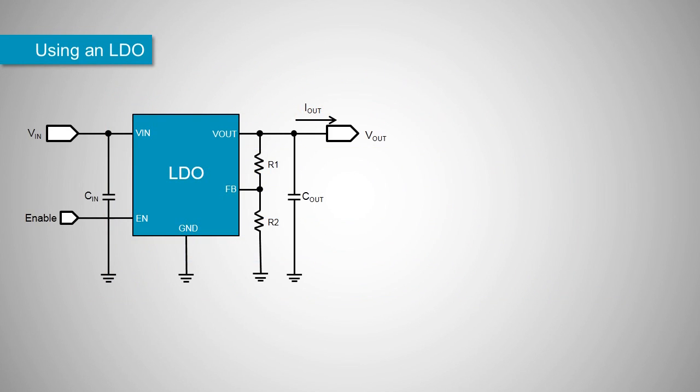LDOs are very easy to use. They need an input capacitor and an output capacitor. Some LDOs have an enable pin to enable or disable the device. Adjustable LDOs need a resistive voltage divider from the output to the feedback pin to set the output voltage. Fixed output voltage LDOs have an internal feedback network.